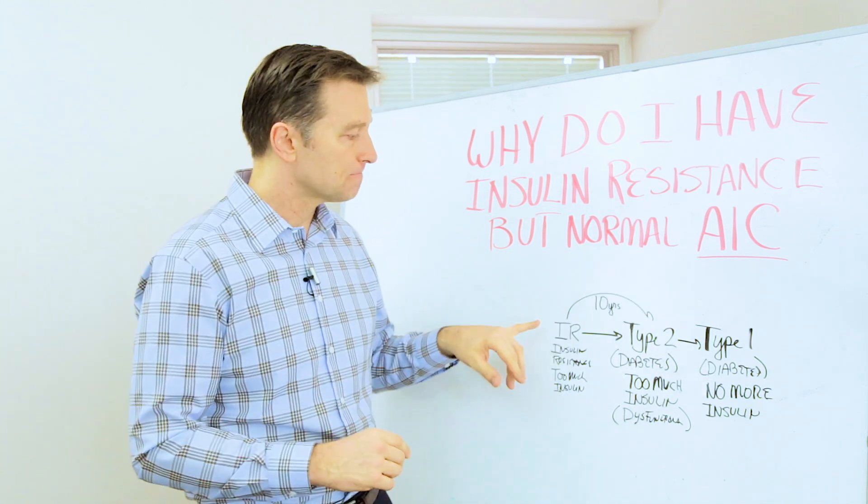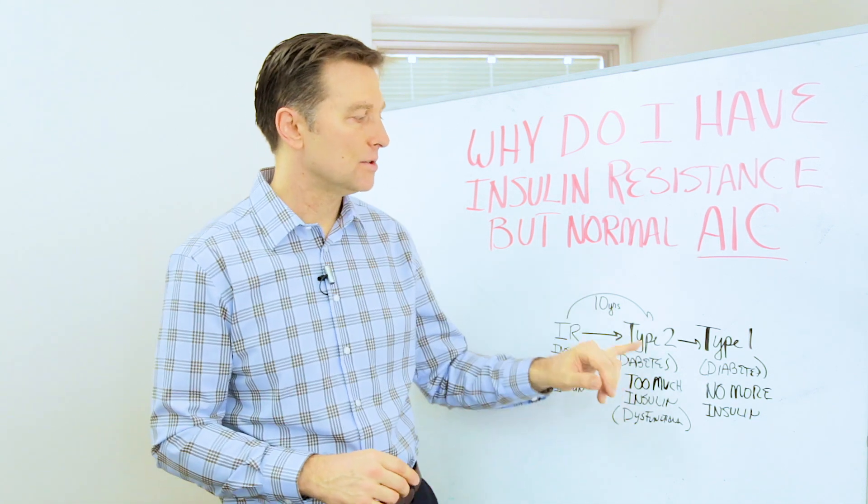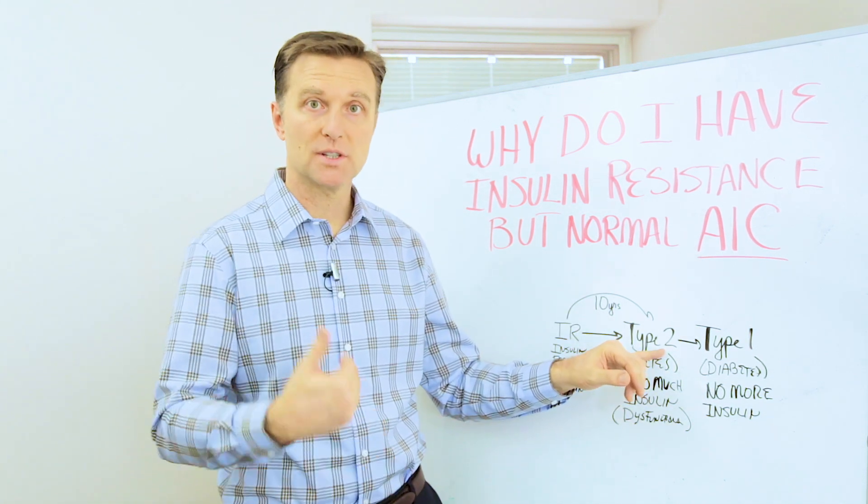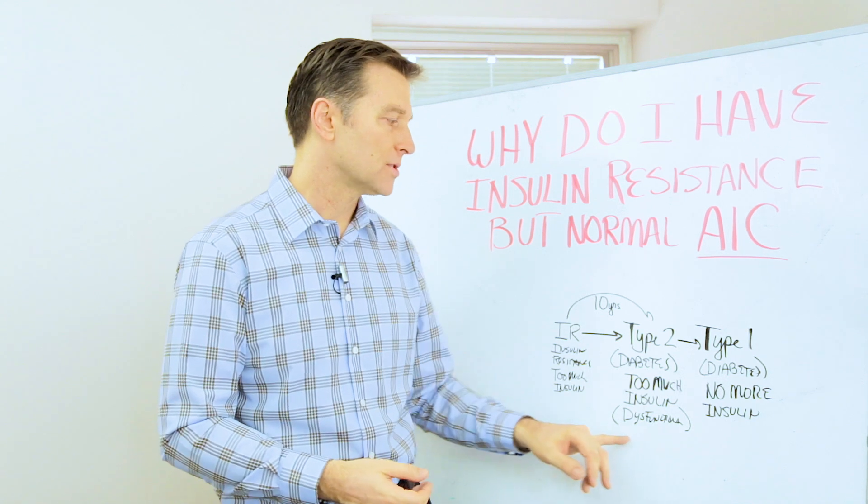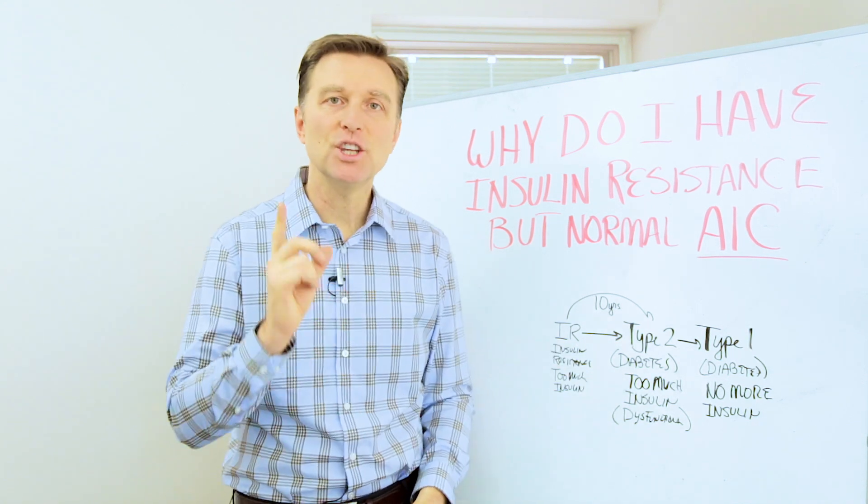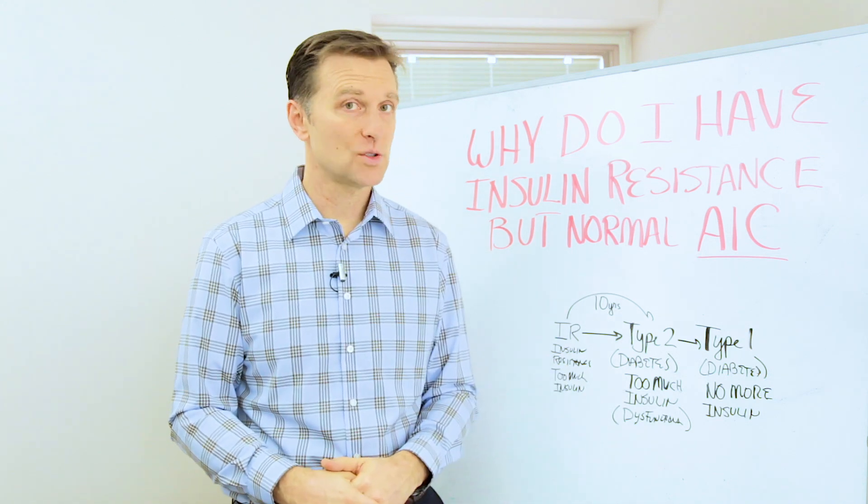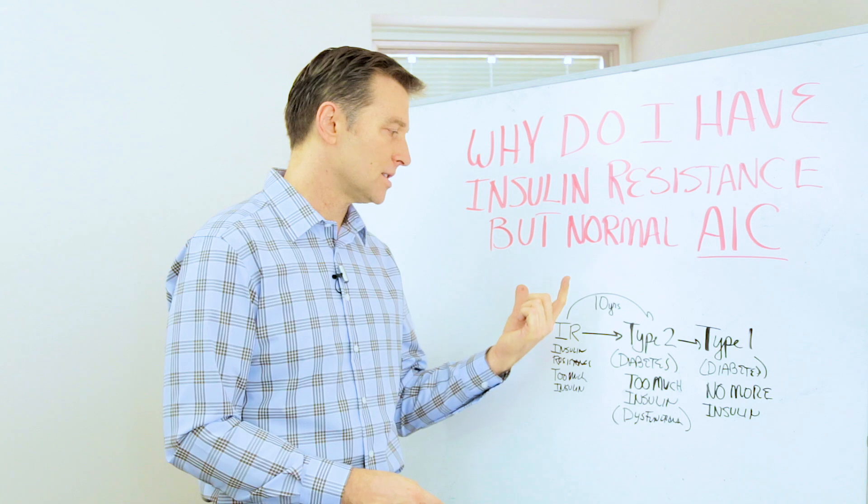But check this out. You first get insulin resistance. Then it converts into type 2 diabetes, which is the first stage where you're actually officially at problems with your blood sugar. Now here's the thing. It takes 10 years for this to develop in some cases. Sometimes it's a lot shorter, but in a lot of cases it's 10 years.